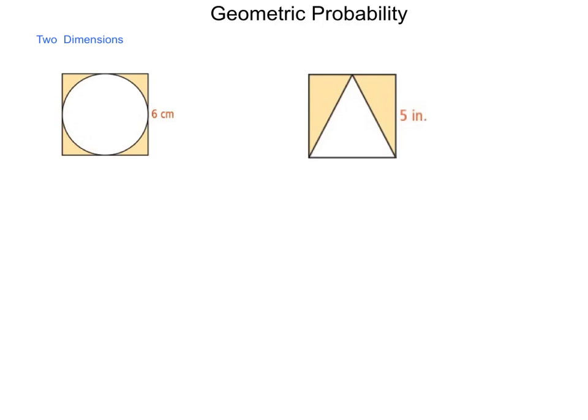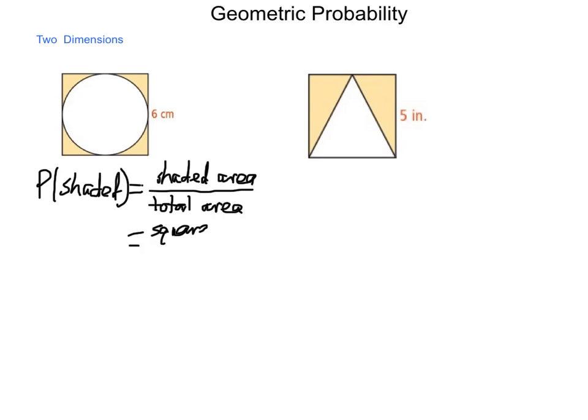The way we get the shaded area, or the way we calculate this probability, is that the probability of the shaded is the shaded area divided by the total area. For our shaded area, the way we're going to calculate this is square minus circle gives us the shade, and the total area is going to be the area of the square.